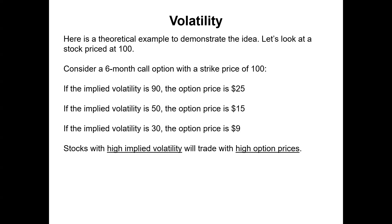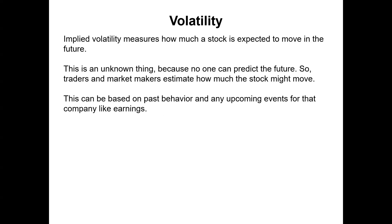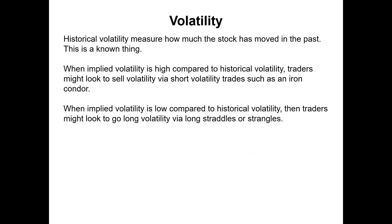Stocks with high implied volatility will trade with high option prices. Implied volatility measures how much a stock is expected to move in the future — this is an unknown thing because no one can predict the future. Traders and market makers estimate how much the stock might move, based on past behavior and any upcoming events like earnings. Historical volatility, on the other hand, measures how much the stock has moved in the past — this is a known thing. When implied volatility is high compared to historical volatility, traders might look to sell volatility via short volatility trades such as an iron condor.